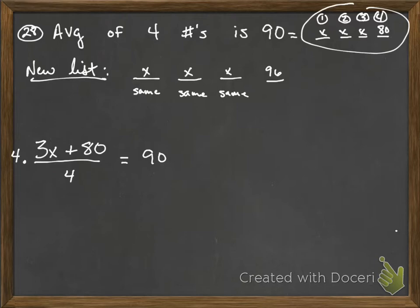To get rid of this four on the bottom, I'm going to multiply both sides by four. I get 3x plus 80 equals 360. Now I can solve this equation for x. I can subtract 80 from both sides. You get 3x equals 280.